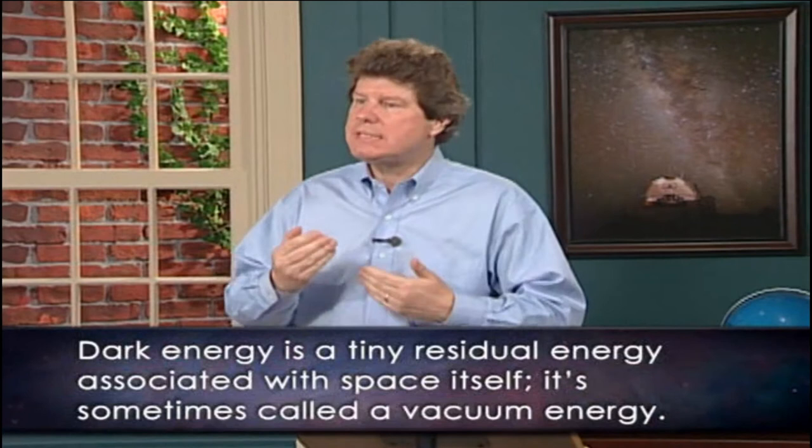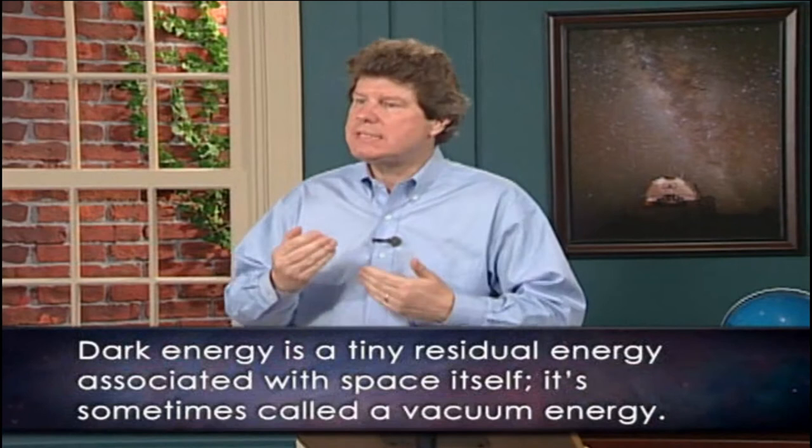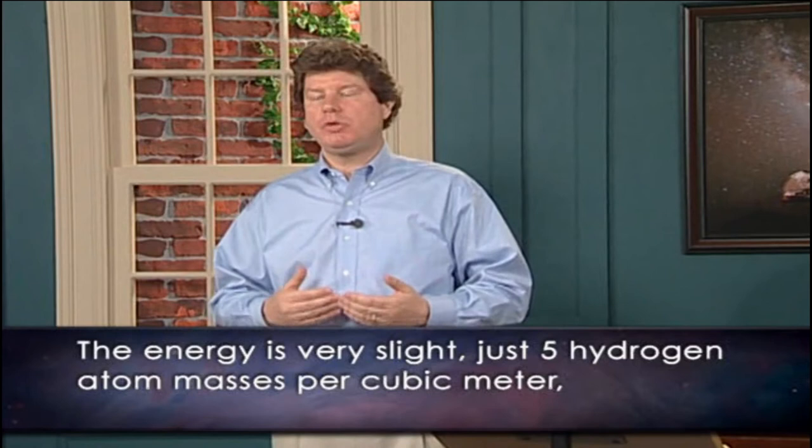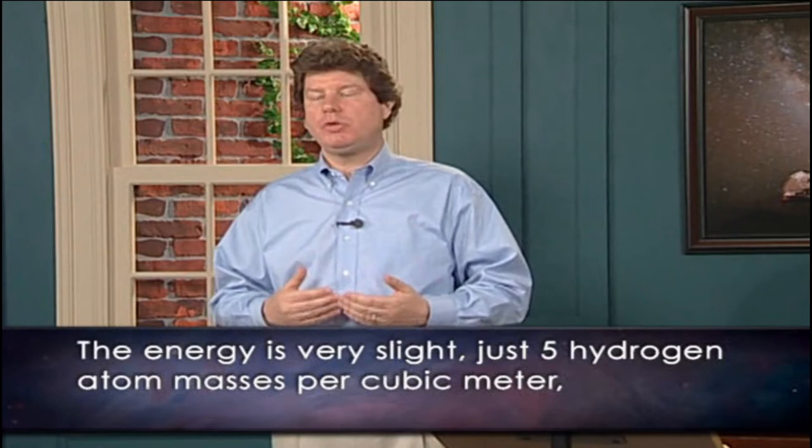Our final cosmic constituent, dark energy, was only discovered in 1998. Just like dark matter, we don't know what it is made of, and its existence has been inferred through its gravitational effect. The gravity of dark energy actually makes the expansion of the universe speed up, and it was this speed-up that was measured for the first time in 1998. The best guess is that dark energy is a tiny residual energy associated with space itself — sometimes called vacuum energy — just five hydrogen atom masses per cubic meter. When averaged over everywhere, it's the dominant component, coming to 73% of everything.